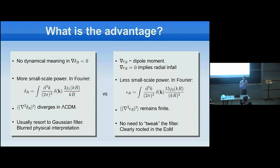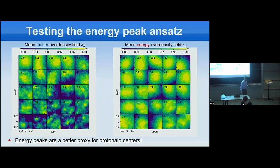Because the variance remains finite, the peak calculation can be done from first principles, rooted in the equations of motion. In contrast, for the matter density field, one typically must resort to a Gaussian filter to keep things finite, which blurs the physical interpretation.